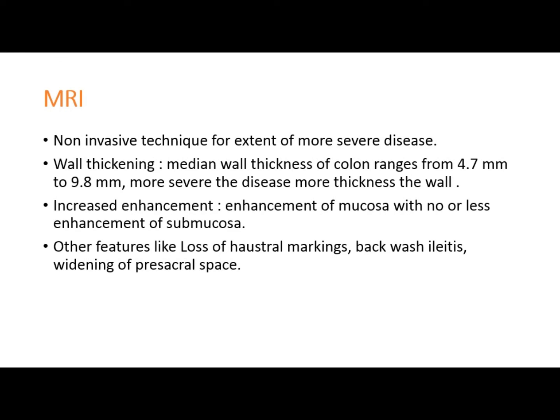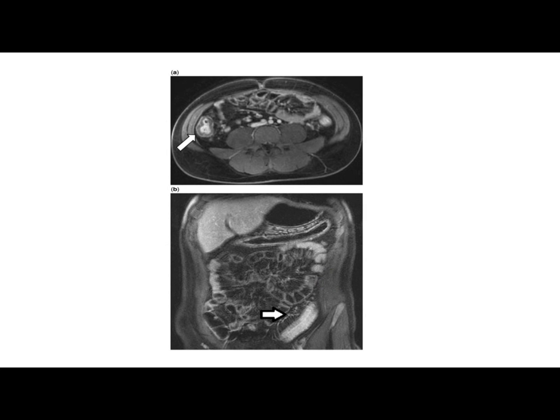Other MRI features include loss of haustral markings, backwash ileitis, and widening of the presacral space. MRI images show thickness of the rectal walls clearly.